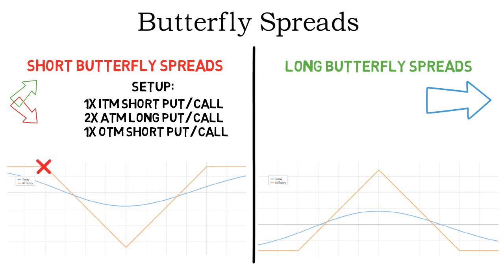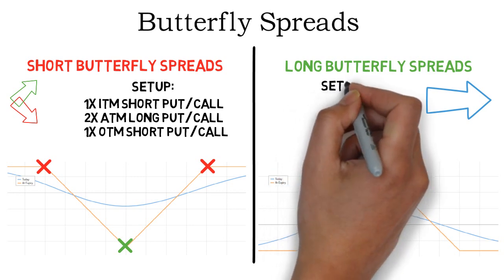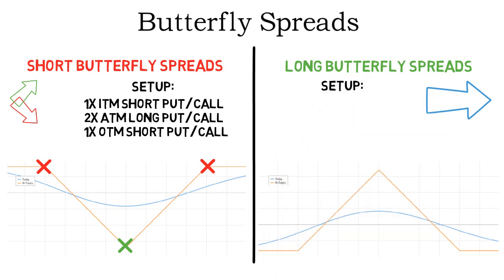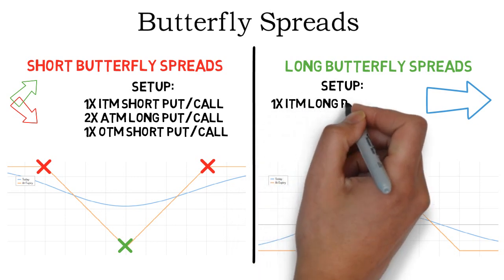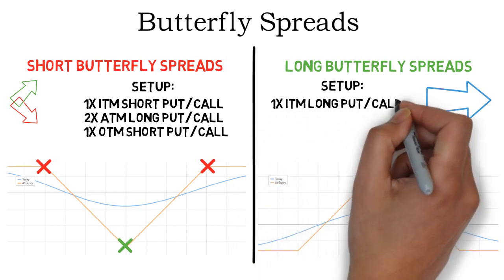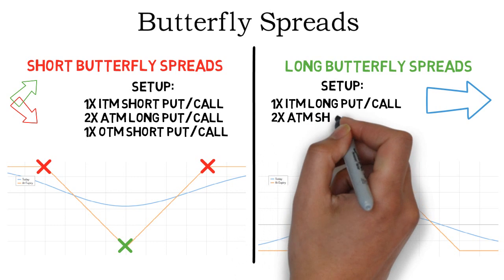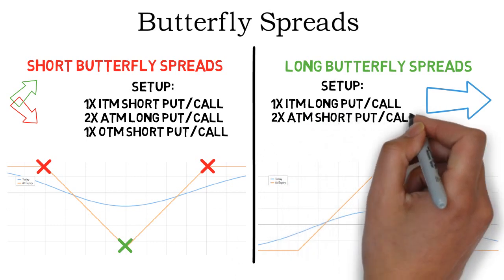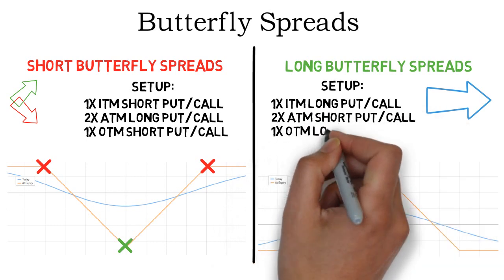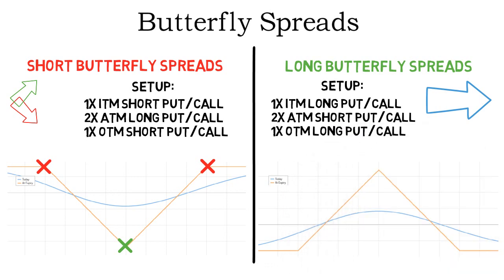To understand the setup better, look at the crosses on the payoff diagram. The red crosses symbolize short options and the green crosses represent the long options. The setup of a long butterfly spread is an inverted version of the short butterfly setup. Instead of selling one in the money and one out of the money put, you'll need to buy these and sell the two at the money puts. The same goes for a long call butterfly spread.